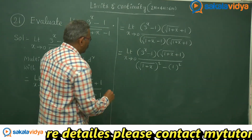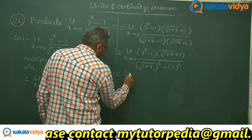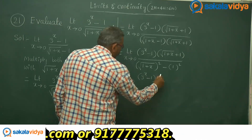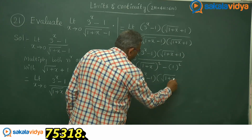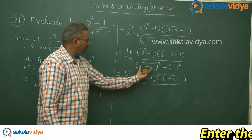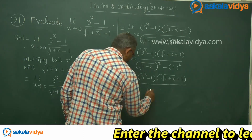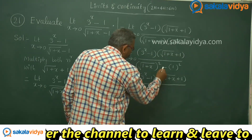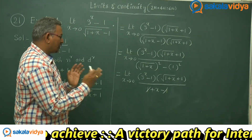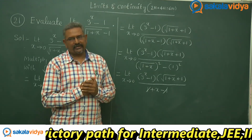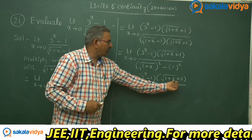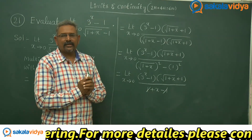The next step gives us limit x tends to 0: 3 power x minus 1 multiplied by root of 1 plus x plus 1, divided by root of 1 plus x whole square which is 1 plus x, minus 1 square which is 1. So minus 1 plus 1 — the ones cancel — leaving x in the denominator. We split this as the product of two limits: 3 power x minus 1 by x, multiplied by root of 1 plus x plus 1.